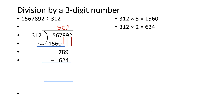Ask how many 300s fit in 789: 300×2=600 and 300×3=900. So try 312×2=624. Write 2 and 624, subtract to get 165, bring down 2 to get 1652. Ask how many 300s fit in 1652: 300×5=1500, so 312×5=1560. Subtract to get remainder 92. The quotient is 5025 and the remainder is 92.